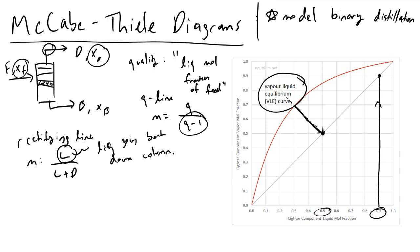Lines are nothing more than one point on a plane and a slope. We already have the point (0.9, 0.9) on this Cartesian coordinate system, and the slope is computed from L and D. It's important to use rulers if doing this on paper, because you need these lines to be straight to get accurate tray counts. So we've now defined our Q line as line one and our rectifying line as line two.